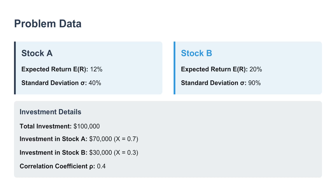Now let's talk about how we actually invest. The example uses a total investment pool of 100,000 shekels. The allocation is very specific: 70,000 of that goes into the safer one, asset A, and the remaining 30,000 is put into the riskier asset B. These specific amounts are so important because they're how we figure out our portfolio weights — the proportion of our money that's in each asset. And this is where it gets really interesting, where the Markowitz model changed everything. We need one more piece of data: the correlation coefficient, written as rho AB. In our example, that value is 0.4.